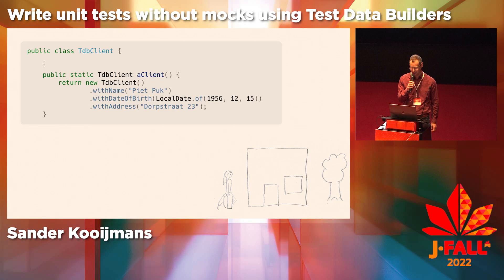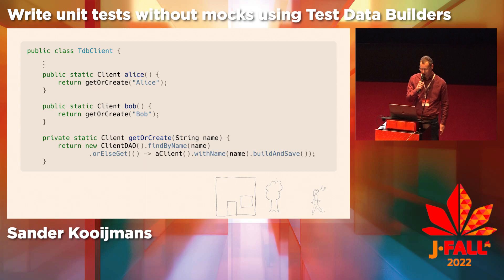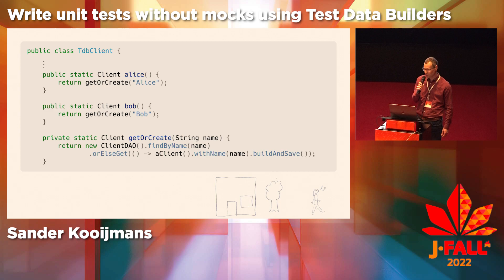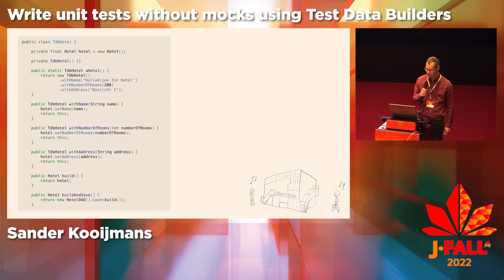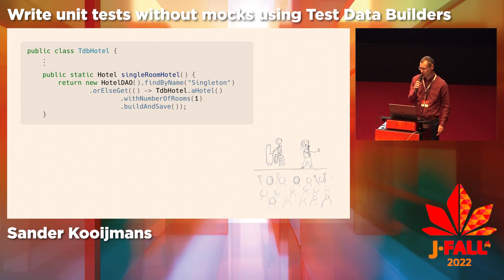This way, each test only needs to specify values that are relevant to the test. Most tests need one or two clients, so I add convenience methods for Alice and Bob. Thanks to the get-or-create behavior, you can call Alice and Bob as often as you want, creating no more than one Alice and no more than one Bob. Here is a test data builder for hotels, and we add convenience methods for hotels too — this one gets or creates a hotel with a single room.